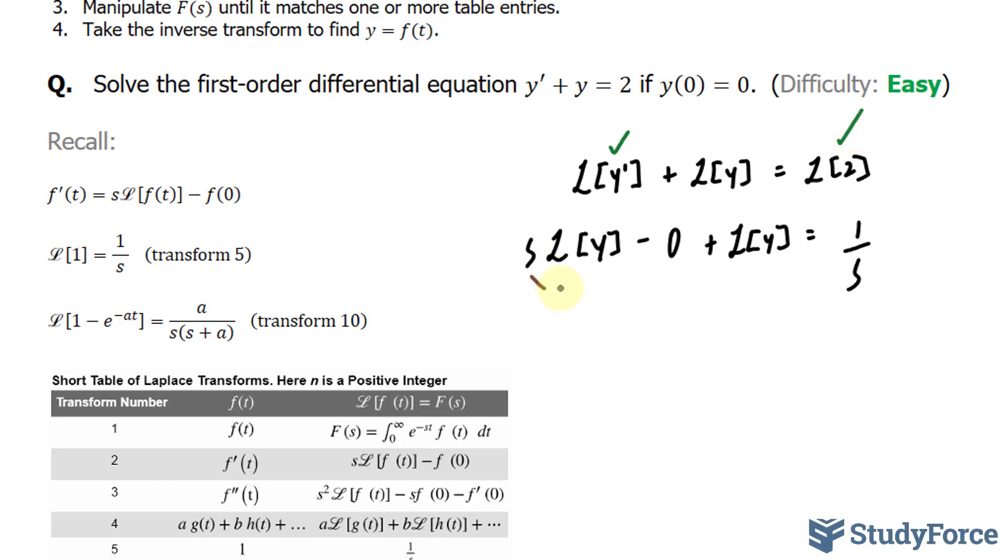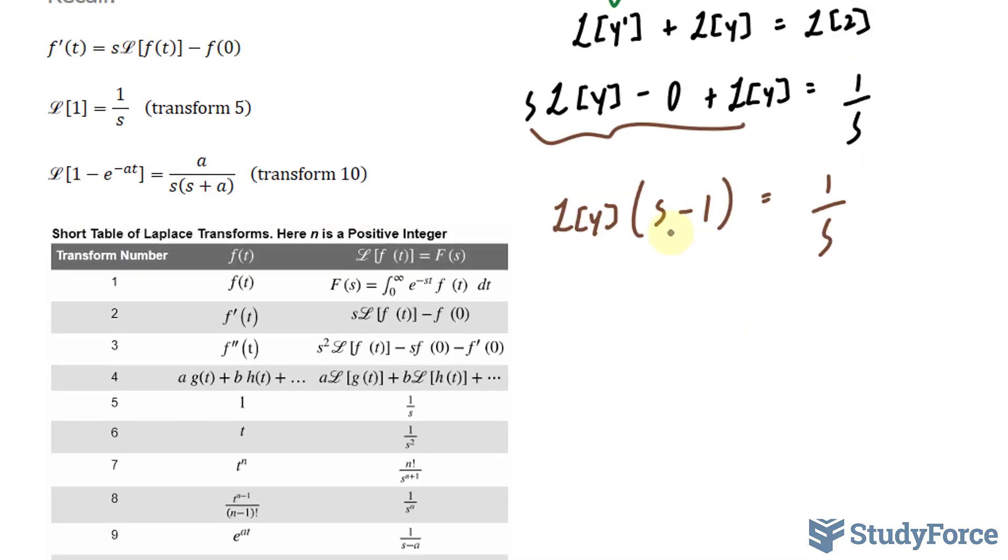You'll notice that these two terms, this one and this one, have the Laplace transform of y in common. So, I can factor that out. We get s minus 1 is equal to 1 over s. Dividing both sides by s minus 1 gives us the transform of y is equal to 1 over s times s minus 1.